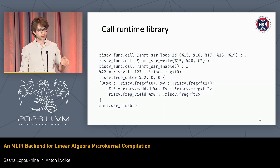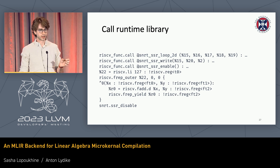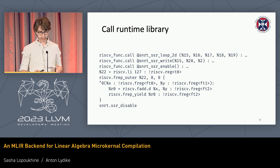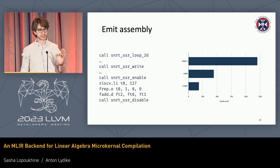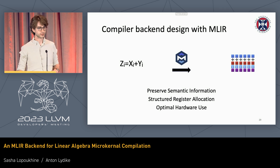From there we can lower all the way to a RISC-V function call that respects the calling convention extension, and the frep outer that corresponds to the frep.o instruction in the assembly. And that's basically it — we've completed the compilation and can output the assembly directly, getting exactly the same performance as our handwritten code. Thank you.